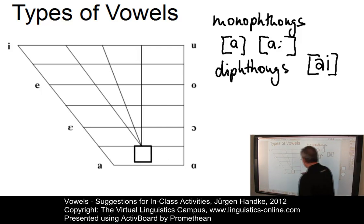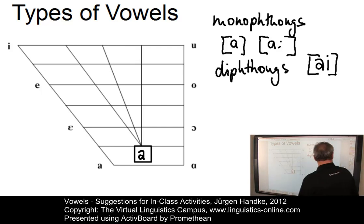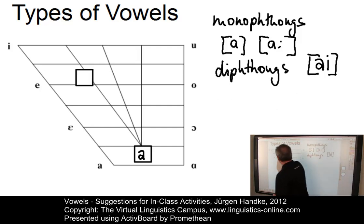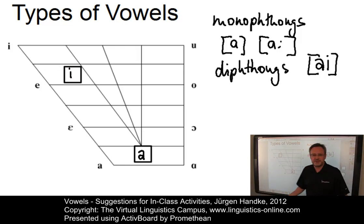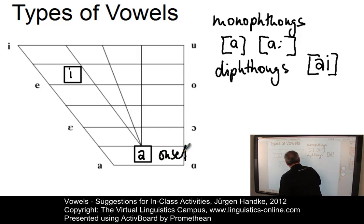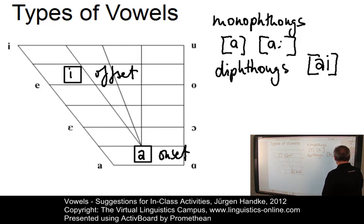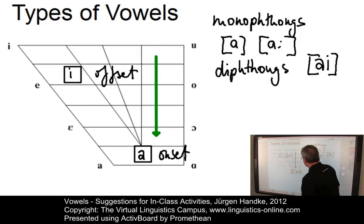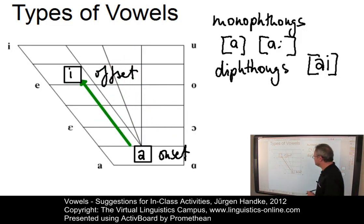The first part is the so-called onset — here the onset is 'a', a low central unrounded vowel. Diphthongs always also have an offset, that is the second part; it is a mid-high to high front vowel. So we have an onset and an offset, and between these two types of articulatory postures the tongue moves — this movement is generally referred to as a glide. Depending on the direction of the glide, you can call it an up-glide, from low to high, giving the result 'aɪ'.